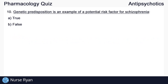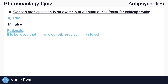For our last question of this quiz, number ten: genetic predisposition is an example of a potential risk factor for schizophrenia. The right answer here is A, true. It is believed that there is a genetic predisposition to schizophrenia.